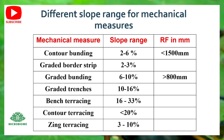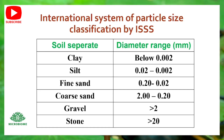International system of particle size classification (ISS): Clay — diameter below 0.002 mm; Silt — 0.002 to 0.02 mm; Fine sand — 0.02 to 0.20 mm; Coarse sand — 0.20 to 2 mm; Gravel — more than 2 mm; Stone — more than 20 mm.